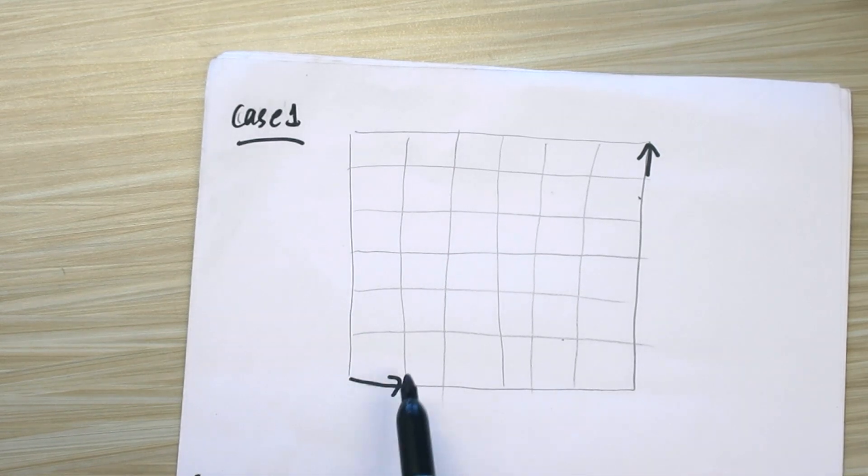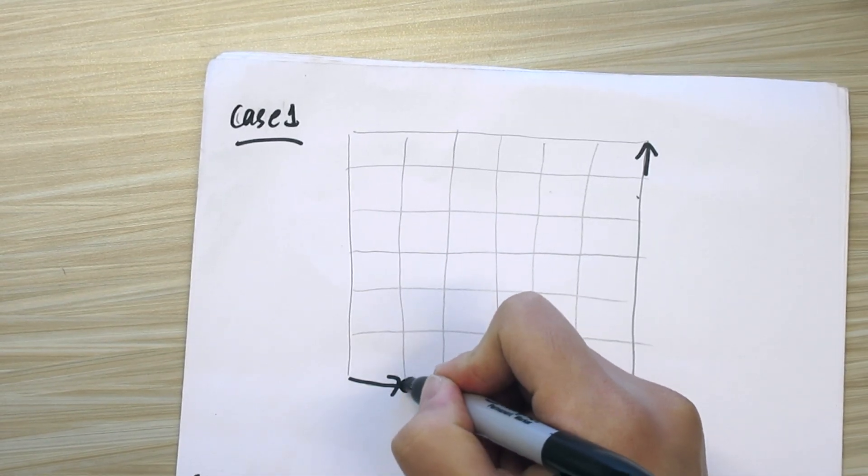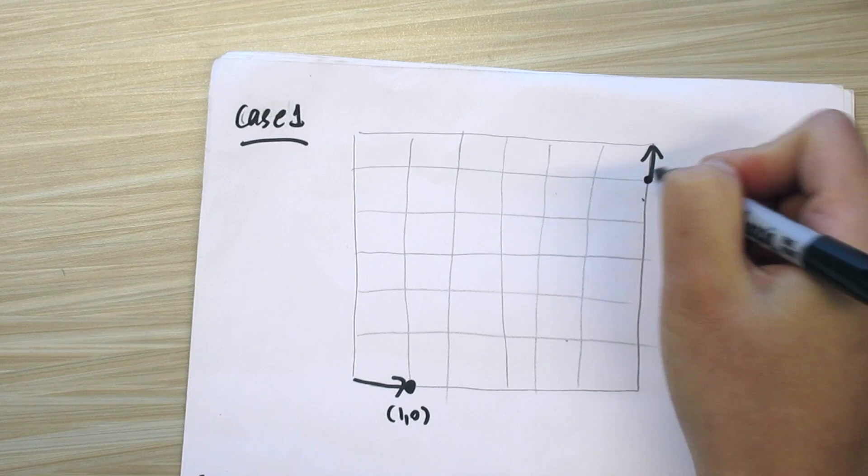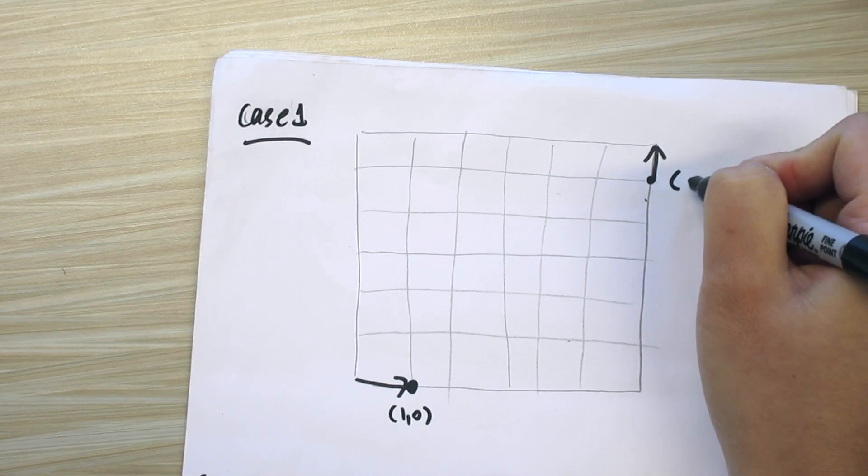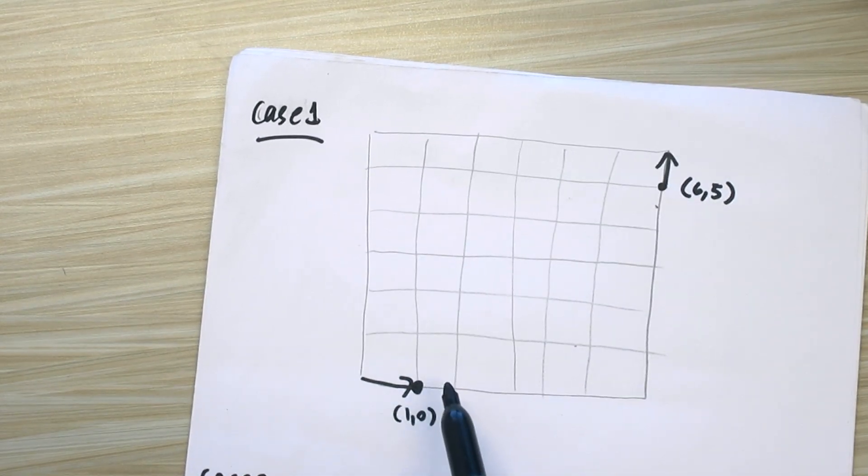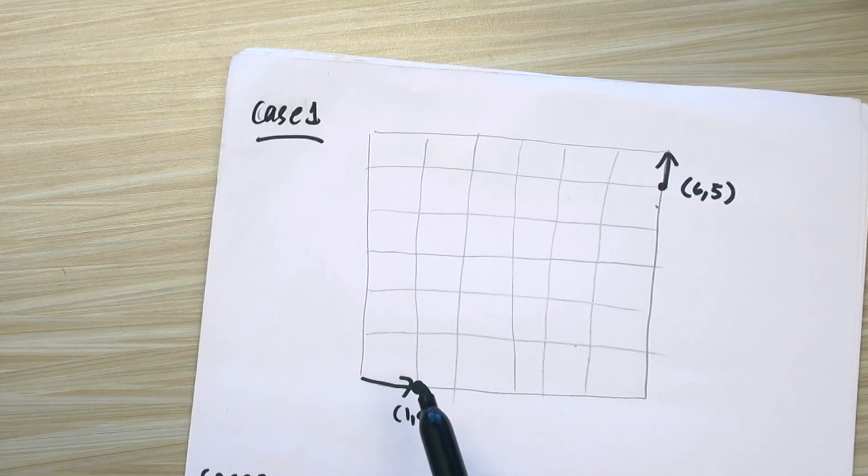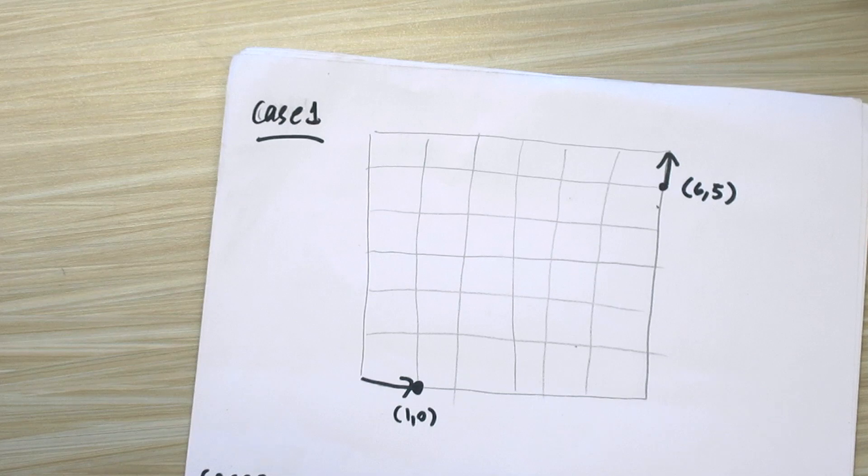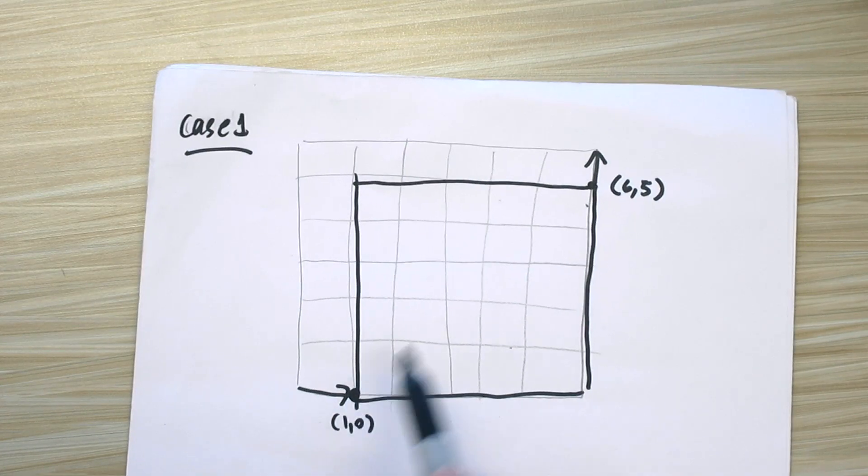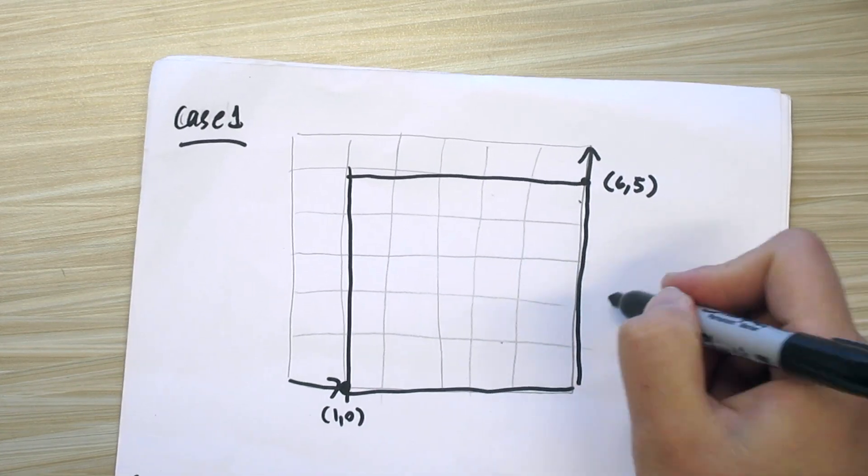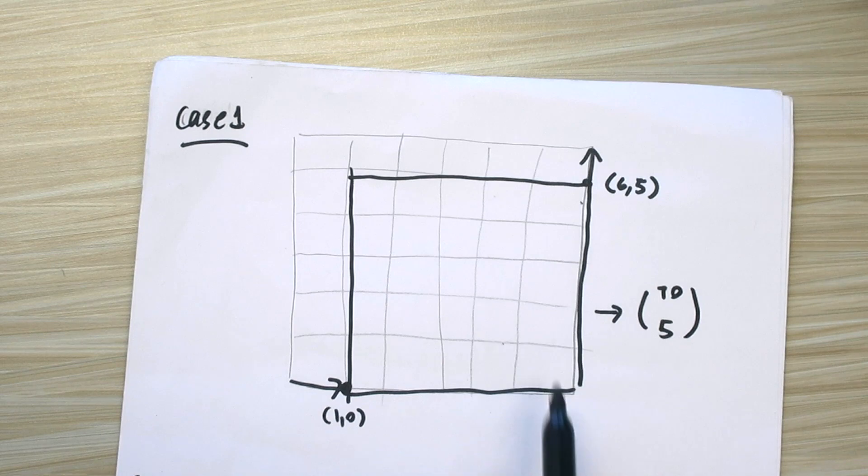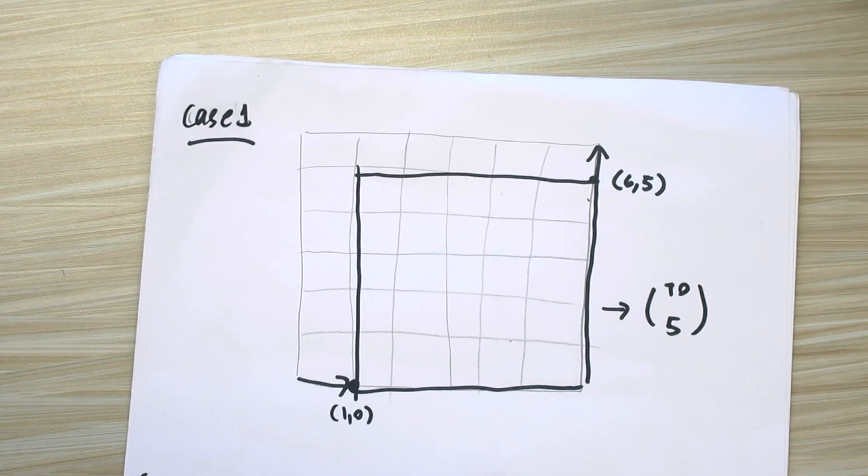Okay, so we know for in case one that we're going to turn right first. So you can imagine that you can break the problem down to some problem as you start off at (1,0). And you count how many ways can you travel to this point, which is (6,5). Then the problem now is simple. The number of ways to travel from (0,0) to (6,6) in case one is precisely the number of ways to travel from (1,0) to (6,5) with no additional conditions. So the problem is just now this grid. To travel from this point to this point with no conditions is 10 choose 5, right? Because there are 5 right and there are 5 up.